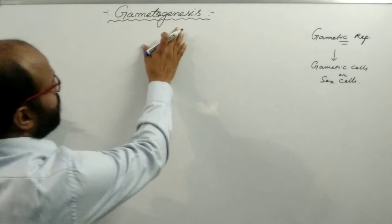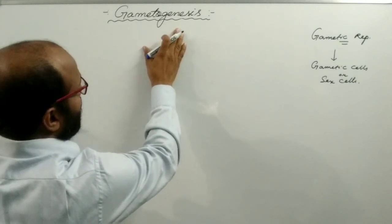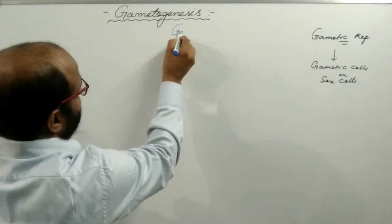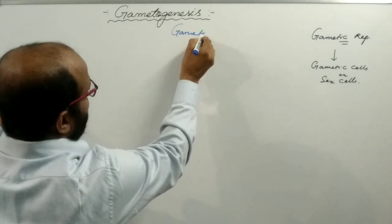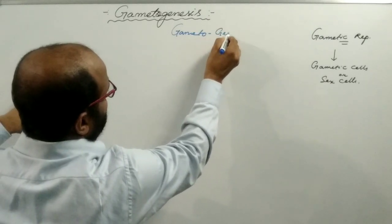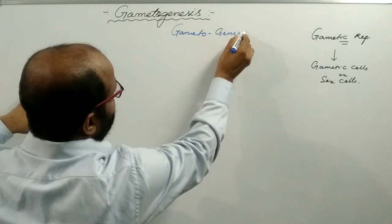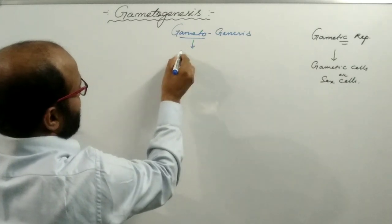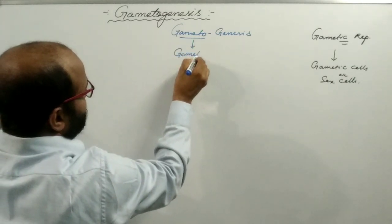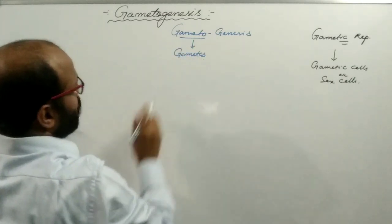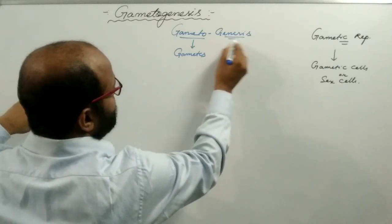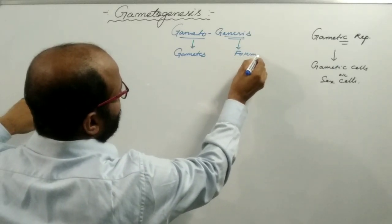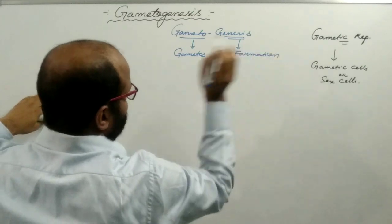In gametic reproduction there is a process known as gametogenesis. There are two words: 'gameto' and 'genesis.' Gameto means gametes, and genesis means formation or production.